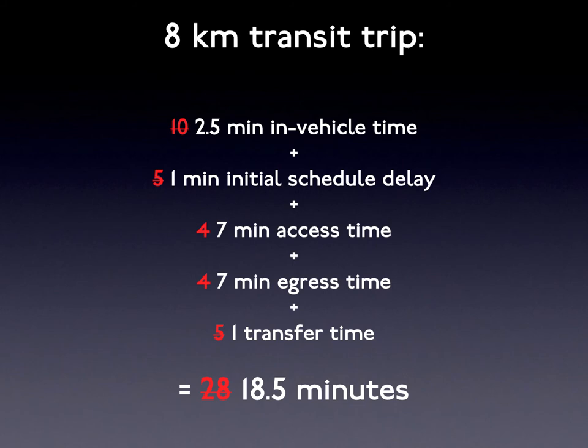Two-and-a-half minutes for acceleration, stop, and deceleration. For a five-mile trip, there will be about five stops at one-mile stop spacing. One minute initial schedule delay, assuming random arrivals. Seven minutes walk access time for the average passenger — twice that of the local transit above, or 0.35 miles (560 meters). At three miles per hour (five kilometers per hour), this is a walk time of 7.1 minutes on each end, though changes to land use patterns could reduce this.